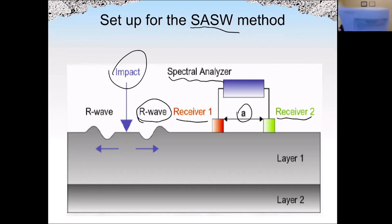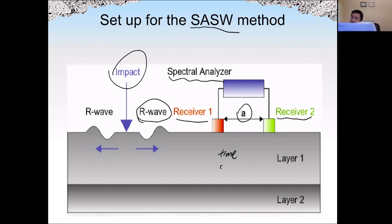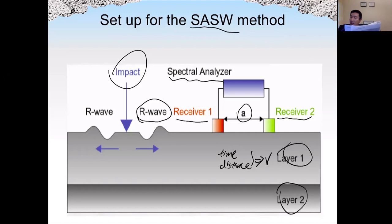Since the distance between the two receivers is known, we can easily measure both time and distance. Based on this information we can calculate the velocity. If we have multiple layers, the wave can detect the depth of those layers and also detect flaws.